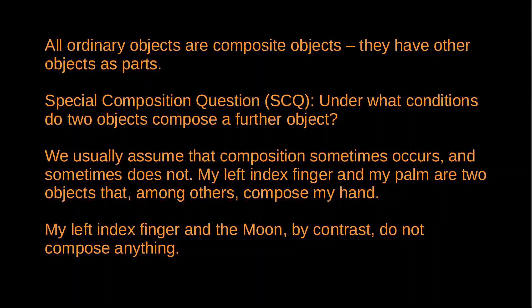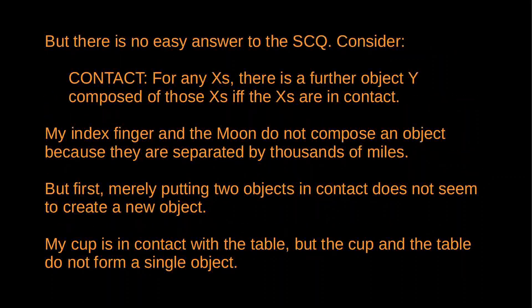The standard view is that sometimes composition occurs — sometimes two objects will compose a further object — and sometimes it does not. My left index finger and the moon do not compose anything. That's the common sense way of thinking about objects, but it turns out to be very difficult to come up with principles that accommodate these beliefs about ordinary objects.